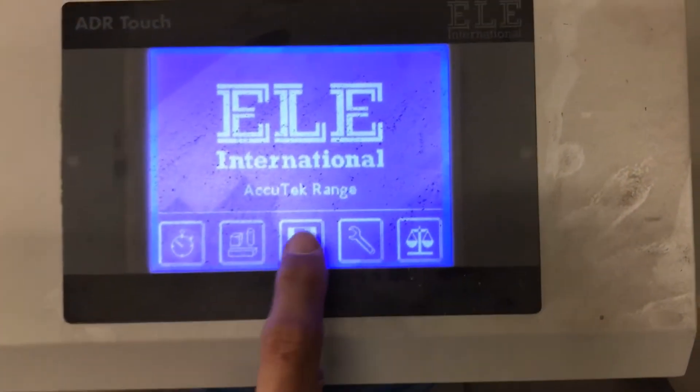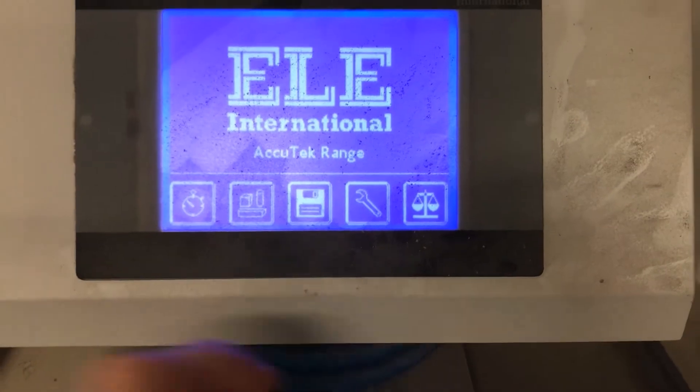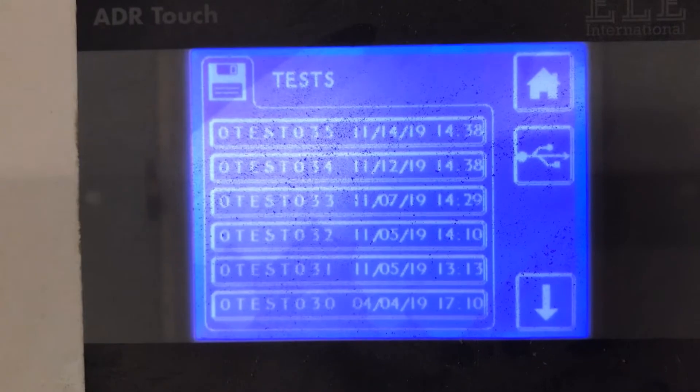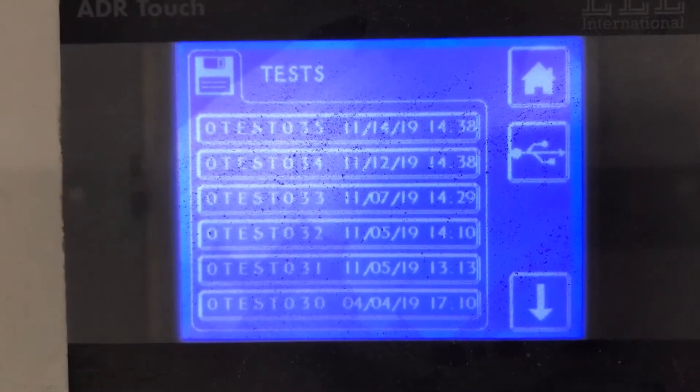So if I press this icon here, it's got a touch screen. Okay, so what it's showing me is a record of the tests that I've done on this. I think I'm the only guy who ever uses this machine.